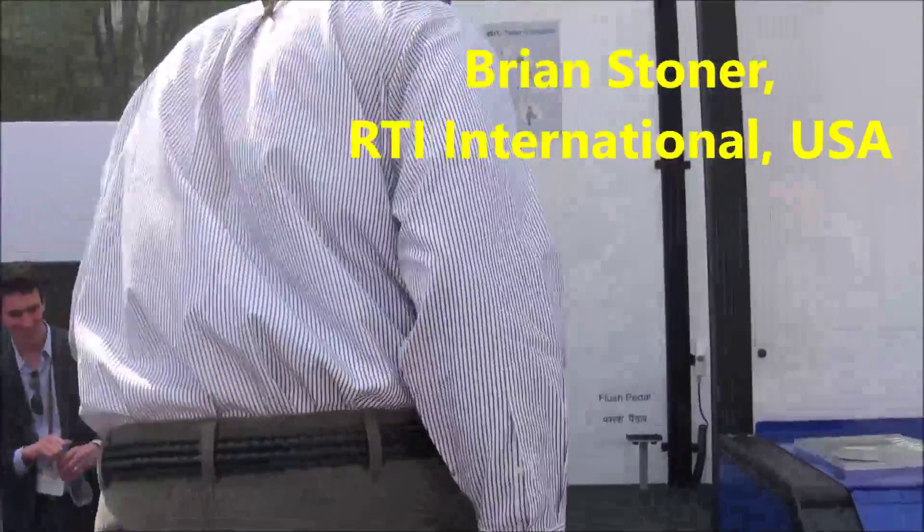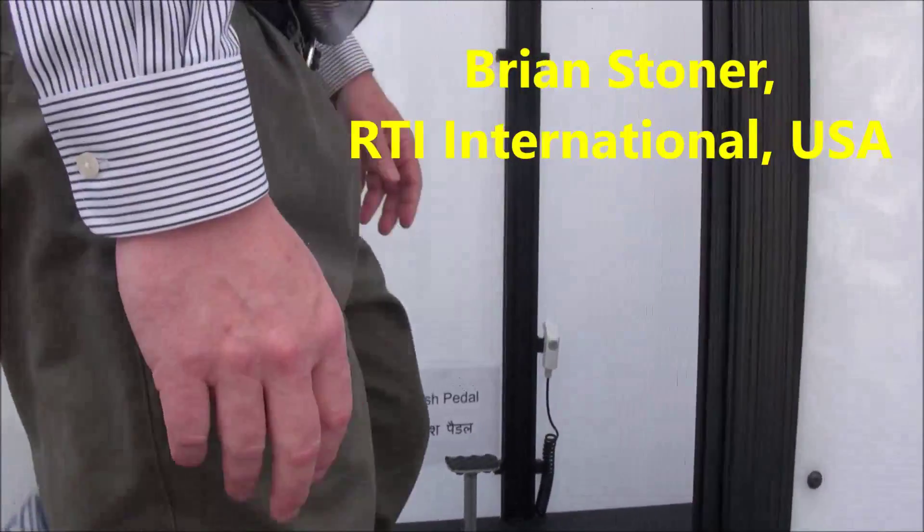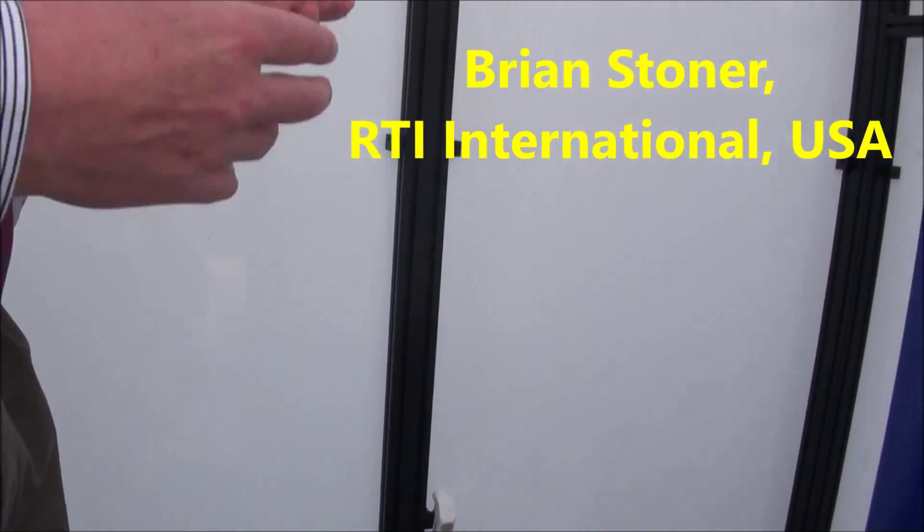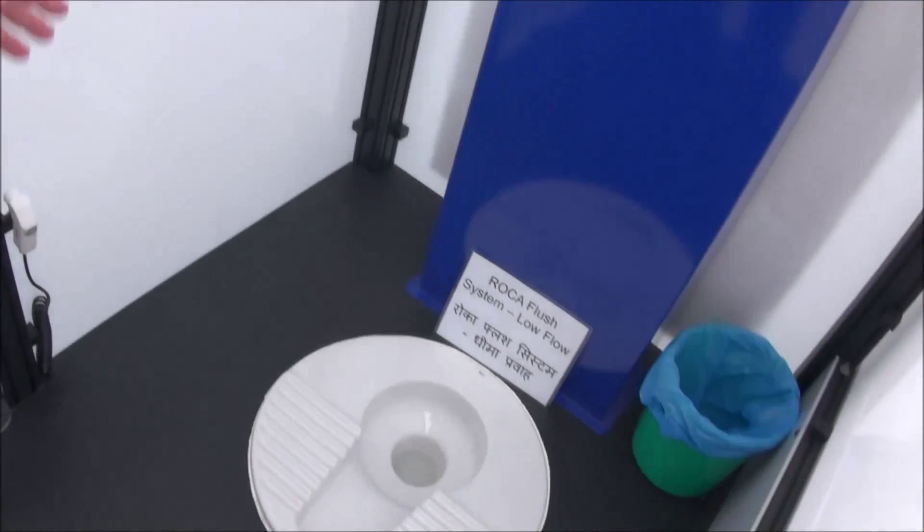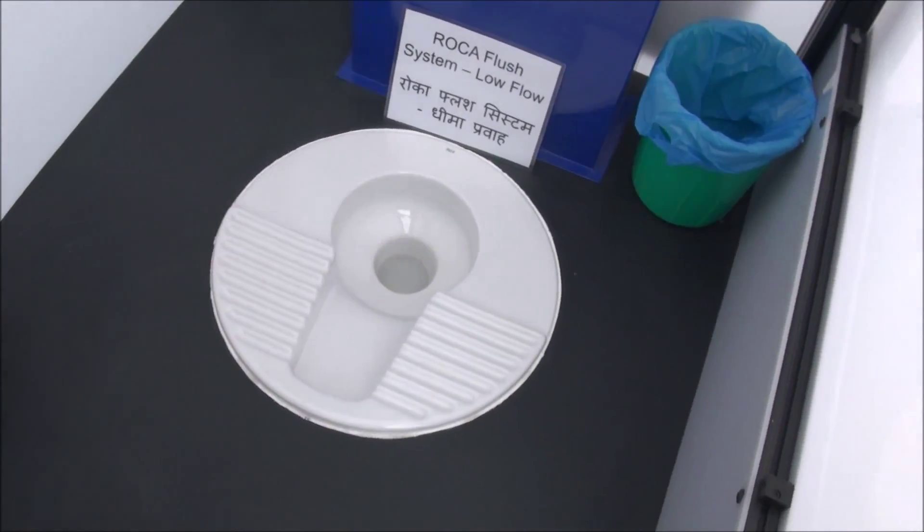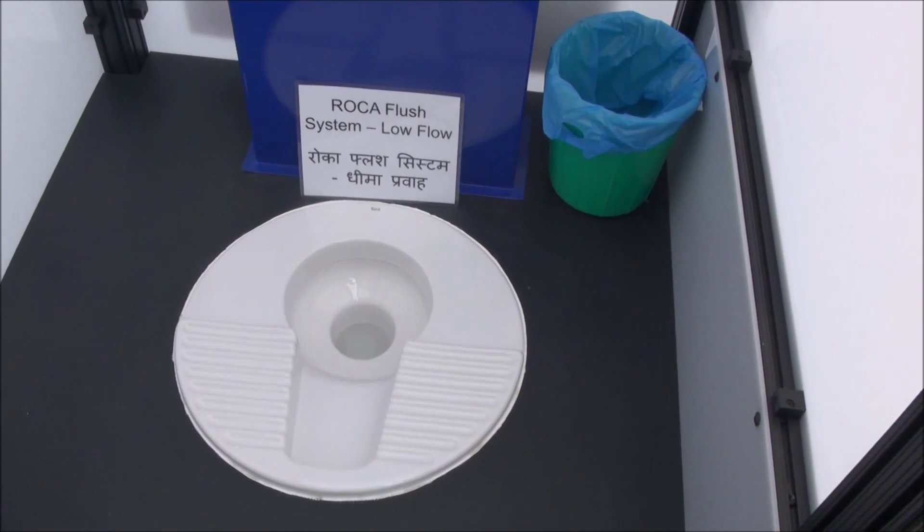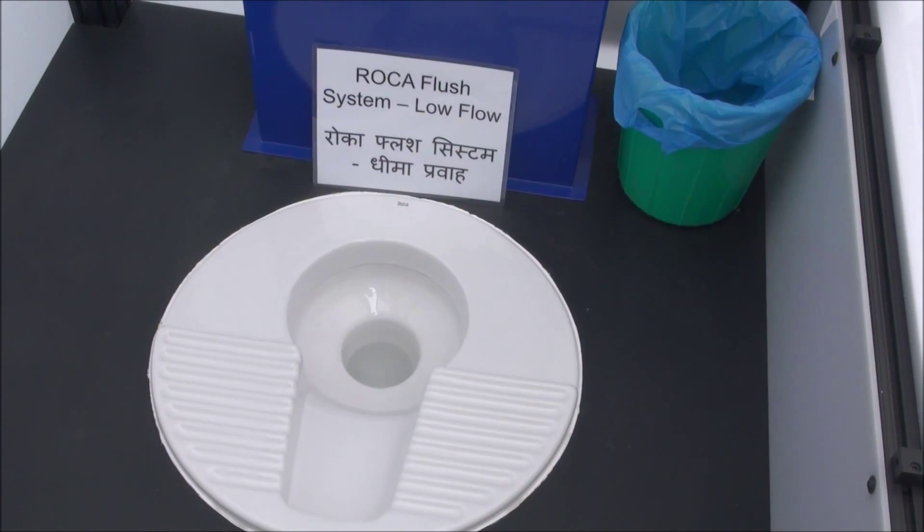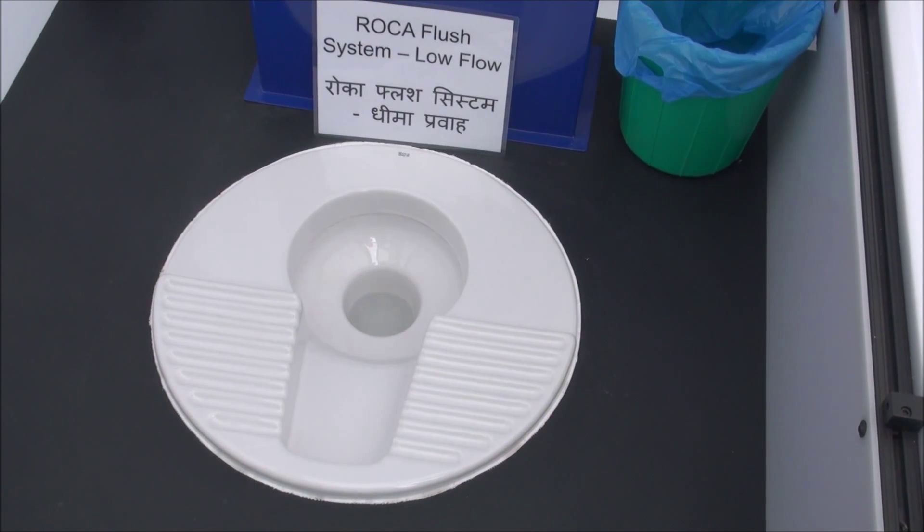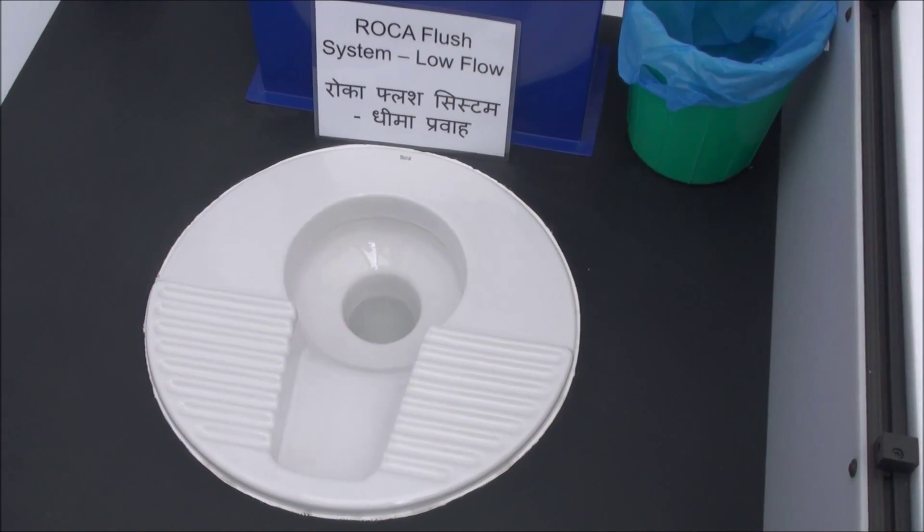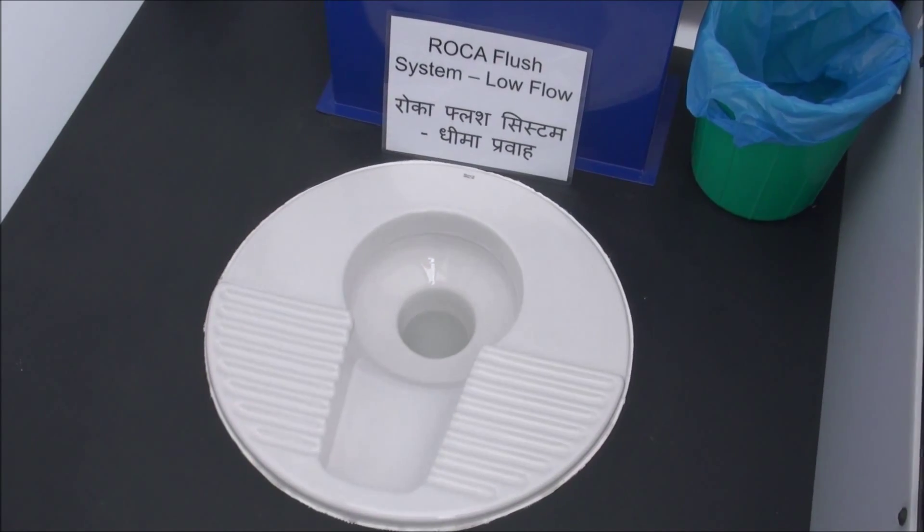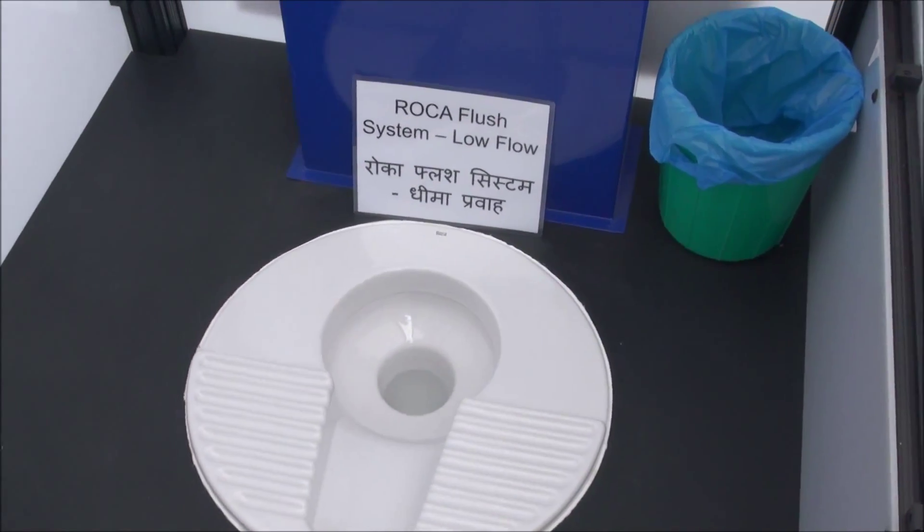We challenged them to develop a plate that did not change the way the user perceived the toilet, but still operates on less than two liters of water. This particular system will operate on 1.5 liters of water. It still maintains a water trap with a standard S-trap, but the fluid dynamic design allows it to effectively flush the liquid.